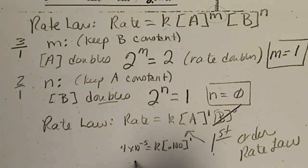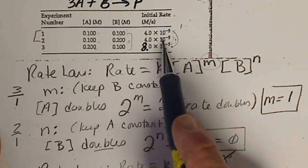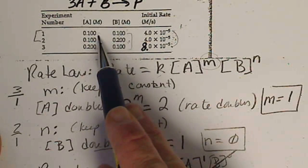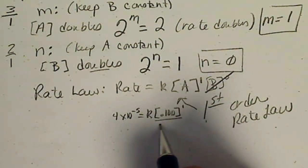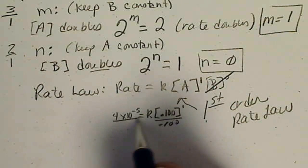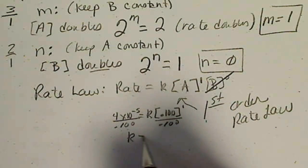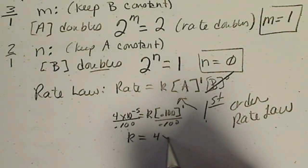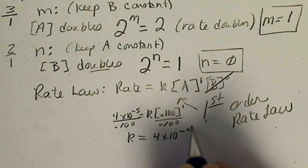And I've got these numbers from here. Here's the rate. Here's the initial concentration of K. Just plug those in. And if we divide both sides by 0.100, then K is equal to 4 times 10 to the minus 4th.